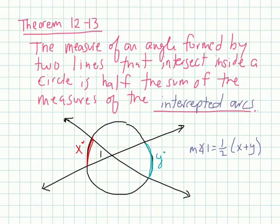Let's look at what this means. So the measure of angle one is equal to half, it's going to be half the size of x plus y. Simple as that.